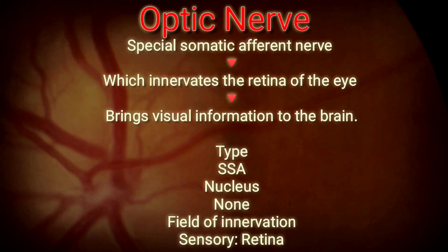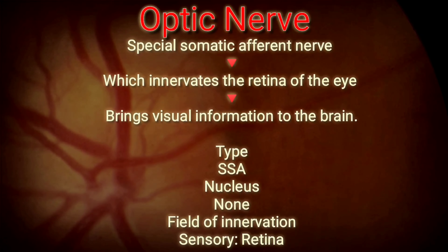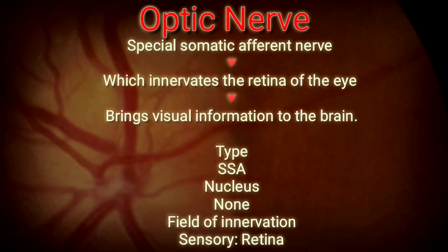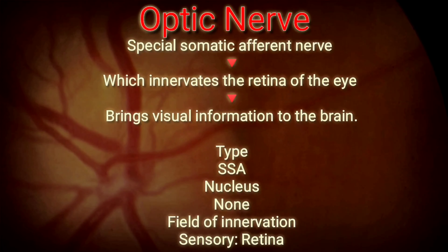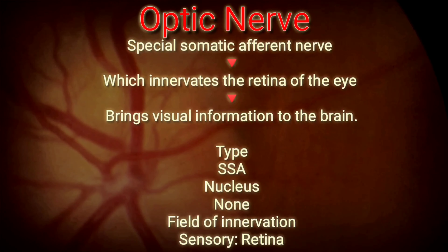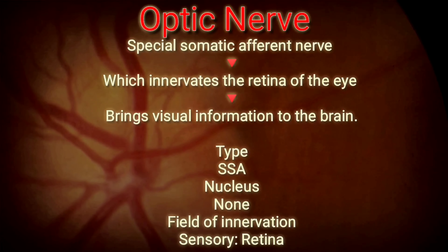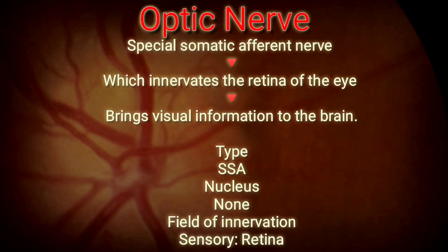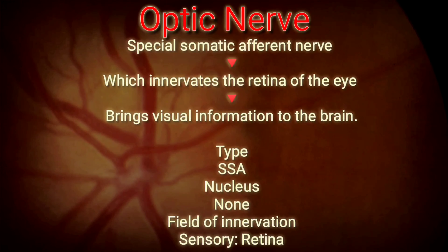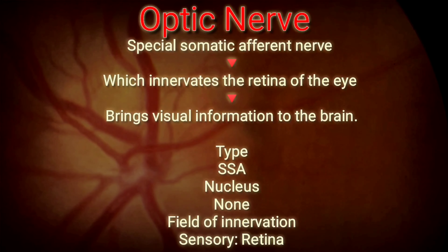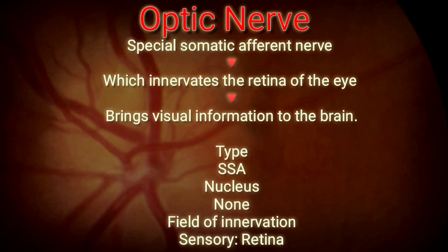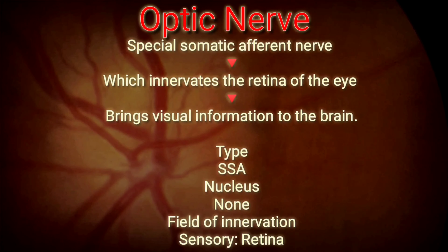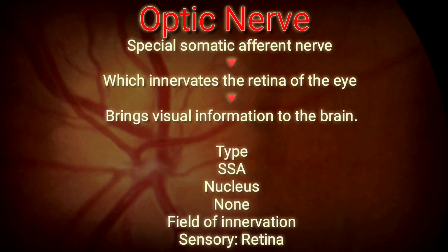The next one is the optic nerve, cranial nerve 2. It is a special somatic afferent nerve which innervates the retina of the eye and brings visual information to the brain. Type: SSA. Nucleus: none. Field of innervation: sensory — retina.